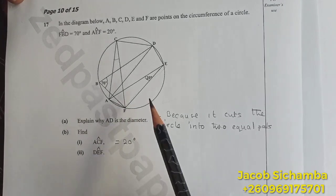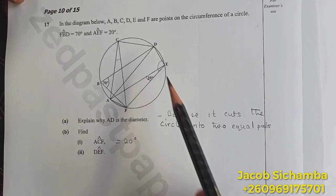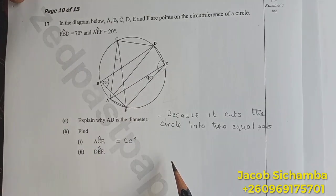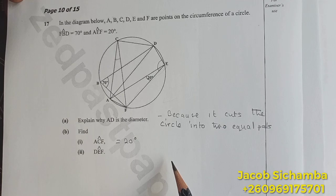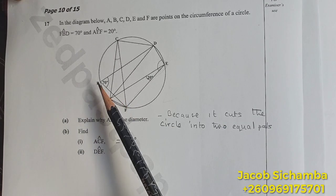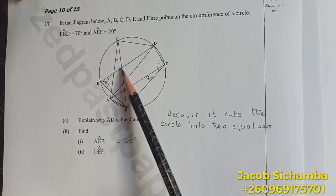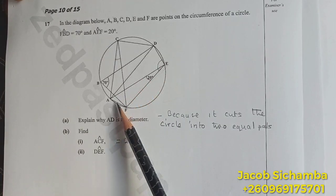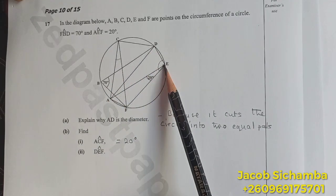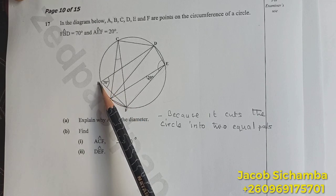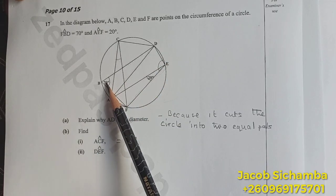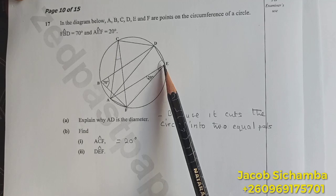Here we are going to use the property of opposite angles. We know that this is a cyclic quadrilateral, DEFB. Meaning this angle is opposite to this angle.